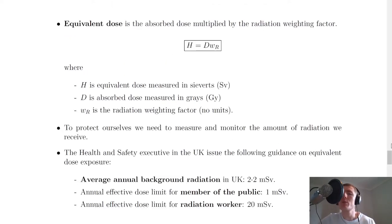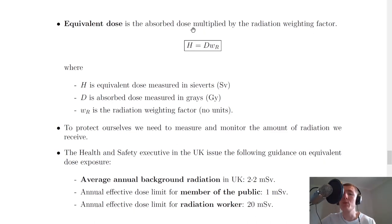Just like absorbed dose, we also have an equation for equivalent dose, which gives us an idea of the biological effect or harm that radiation will cause on a material. Equivalent dose is the absorbed dose multiplied by the radiation weighting factor. The equation, which is on the relationship sheet in the exam, is H equals D times W_R, where H is the equivalent dose measured in Sieverts, D is the absorbed dose measured in Grays, and W_R is the radiation weighting factor, which has no units.